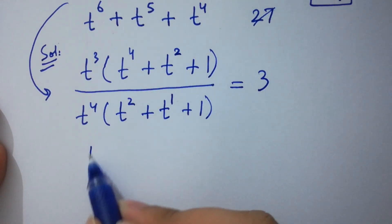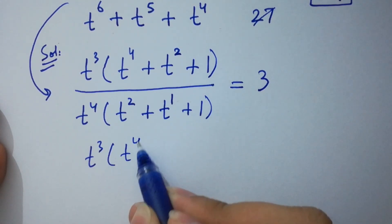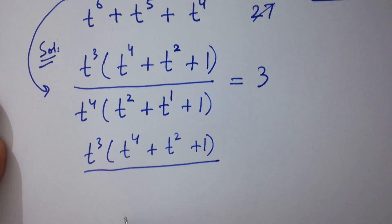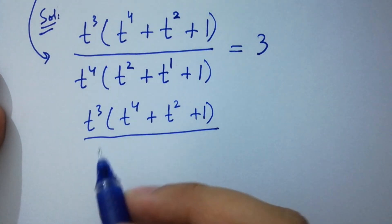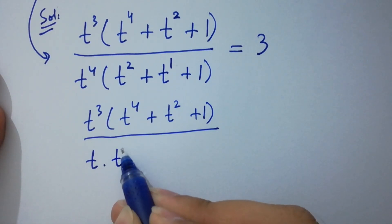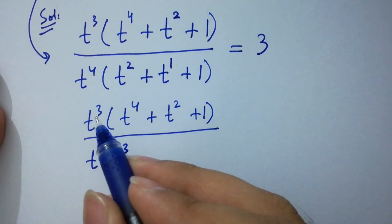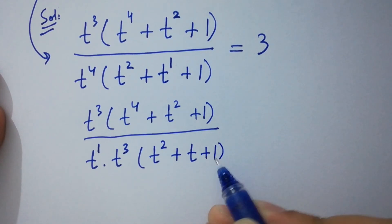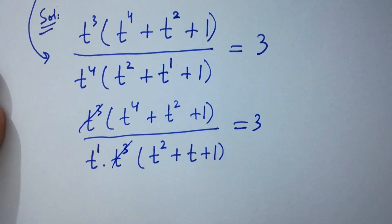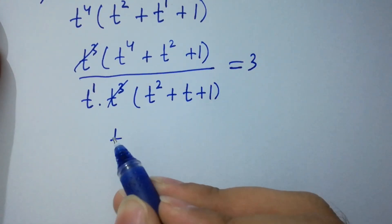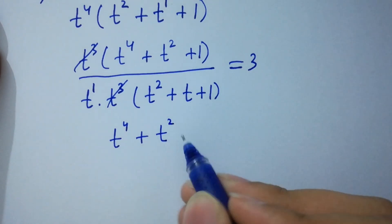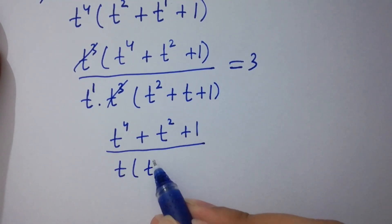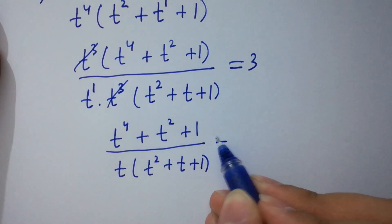Simplify this: t³(t⁴ + t² + 1) over t⁴(t² + t + 1). Note that t⁴ can be written as t × t³. So t³ in the numerator and t³ in the denominator cancel. We have (t⁴ + t² + 1) over t(t² + t + 1) equal to 3.